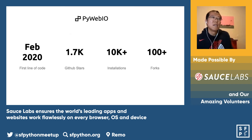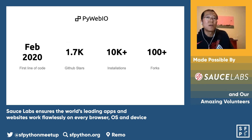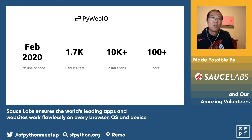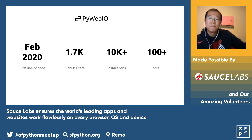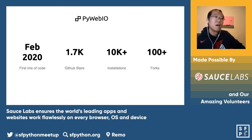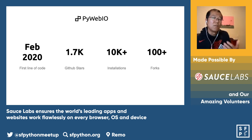We started the first line of code last year, and so far we've reached 1.7k GitHub stars, 10k plus installations, and even though we don't know who installed it, from the feedback we know our users are from all over the place. We also have 100 plus forks, and we believe there are 350 repositories on GitHub using our library and sharing their code.